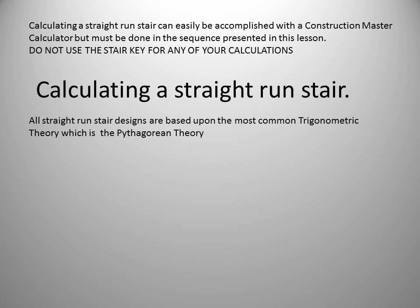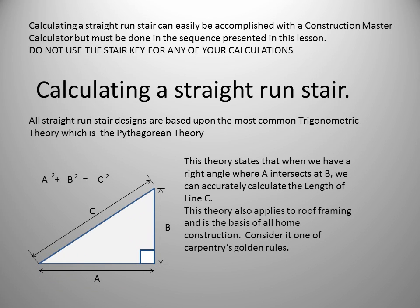All straight run stair designs are based upon the most common trigonometric theory, which is the Pythagorean theorem. The Pythagorean theorem states that when we have a right angle, or 90 degrees, where A intersects at B, we can accurately calculate the length of line C. This theory also applies to roof framing and is the basis of all home construction. Consider it one of carpentry's golden rules.